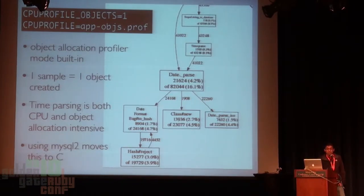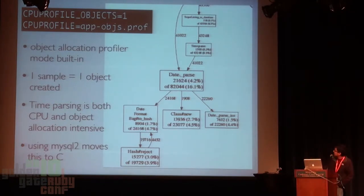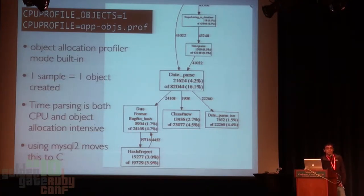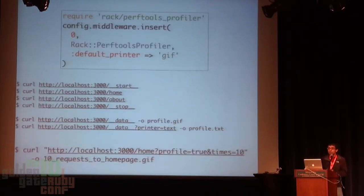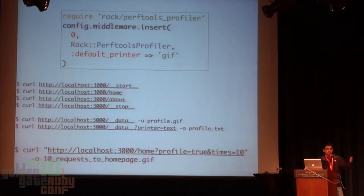I also recently added an object allocation mode. You can set this variable and instead of CPU cycles, each box represents the number of objects allocated inside that function. On a production app, the date parse function was creating tons of objects — about 15-16% of all objects created were being created in that function. Recently we're switching over to MySQL2 since that moves all the date parsing down to C and reduces objects as well as CPU overhead. The easiest way to use this is with a project called Rack PerfTools Profiler — you pull in this middleware, and it adds URLs you can visit to start profiling your application. On any URL, add profile=true and times=some number, and it'll run that action that many times, produce a profile, and spit out a GIF in your browser.